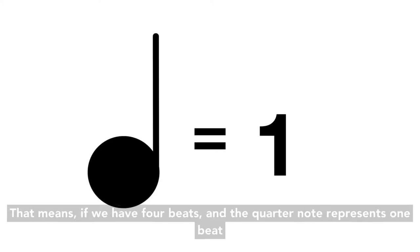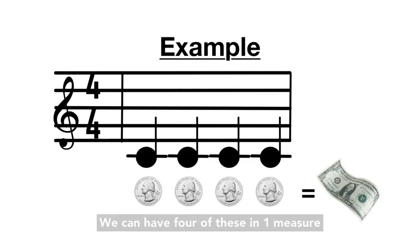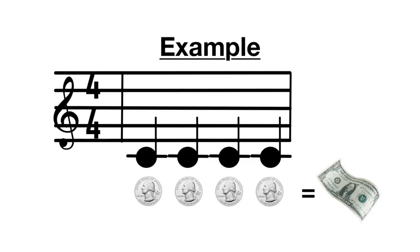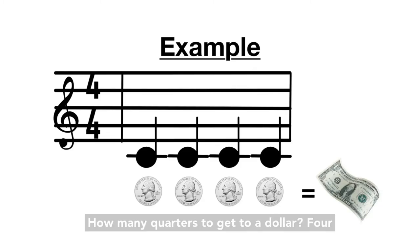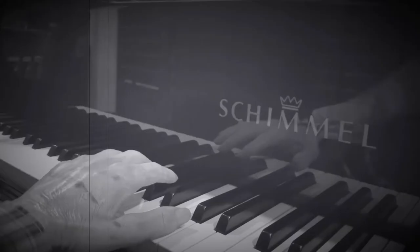That means that we have four beats, and the quarter note represents one beat, so we can have four of these in one measure. How many quarters to get to a dollar? Four.